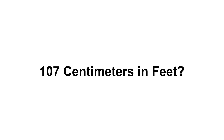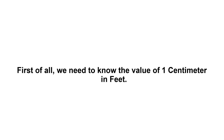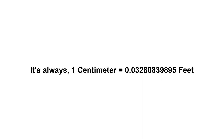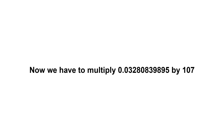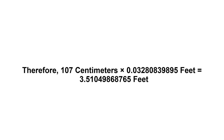107 centimeters in feet. First of all, we need to know the value of one centimeter in feet — one centimeter equals 0.03280839895 feet. Now we have to multiply 0.03280839895 by 107. Therefore, 107 centimeters times 0.03280839895 feet equals...